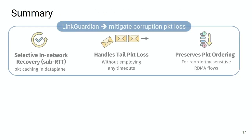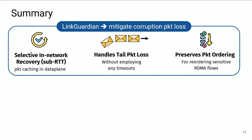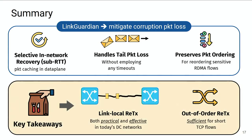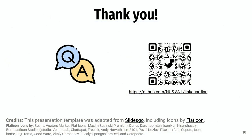In summary, we propose Lingardian to mitigate corruption packet loss by performing selective in-network recovery at sub-RTT timescales. Lingardian handles tail packet loss without employing any timeouts, and is able to preserve packet ordering for reordering-sensitive RDMA flows. We demonstrate that link-local retransmission is both practical and effective in today's datacenter networks, and that out-of-order retransmission is sufficient for short TCP flows. Thank you, and I'm happy to take questions.